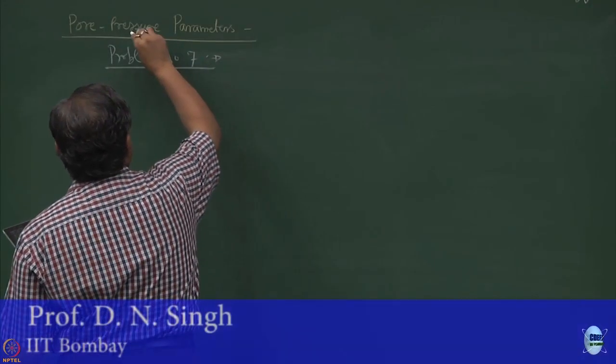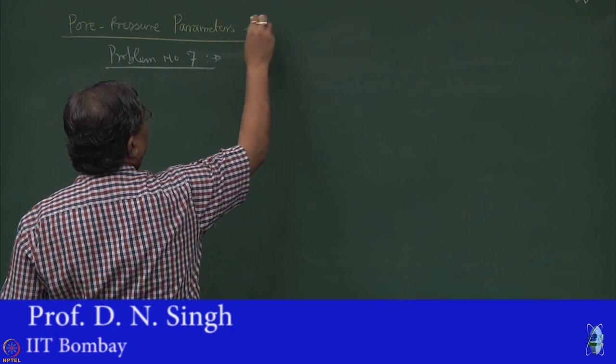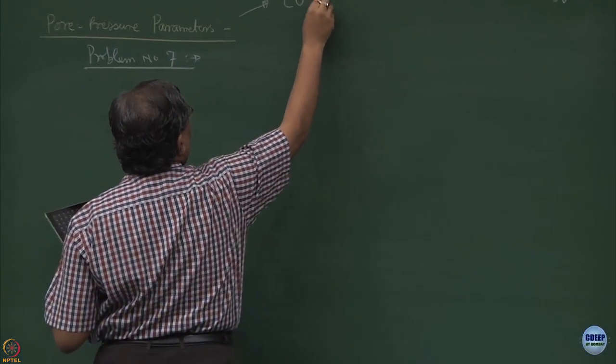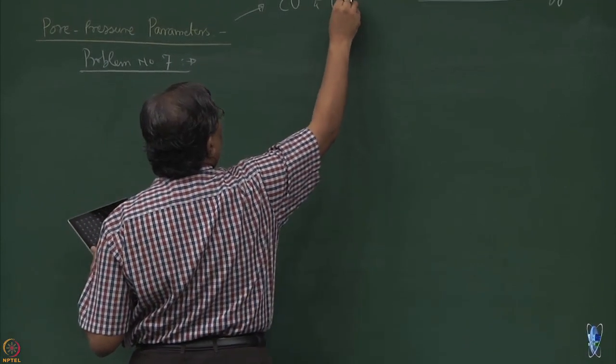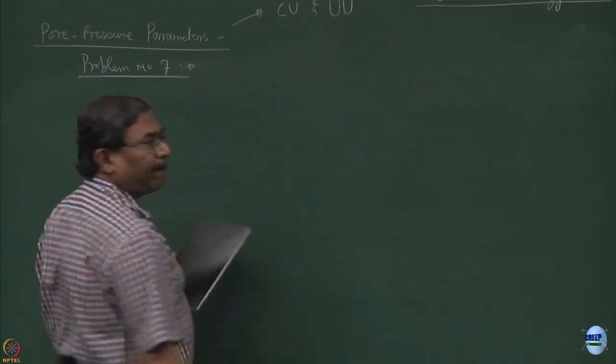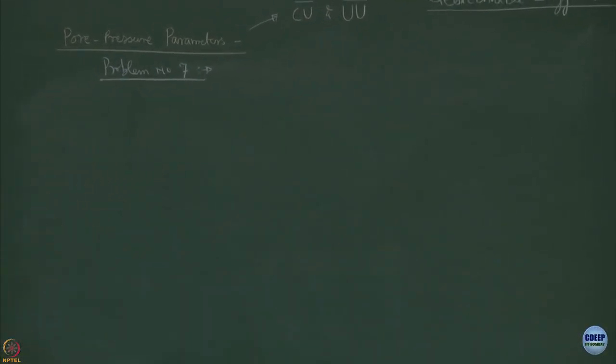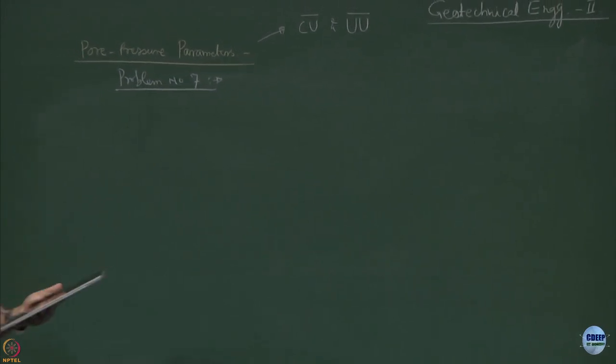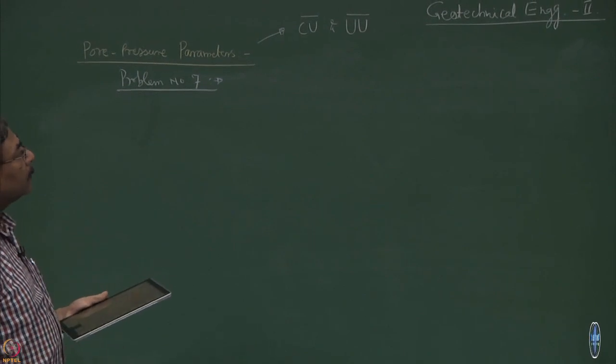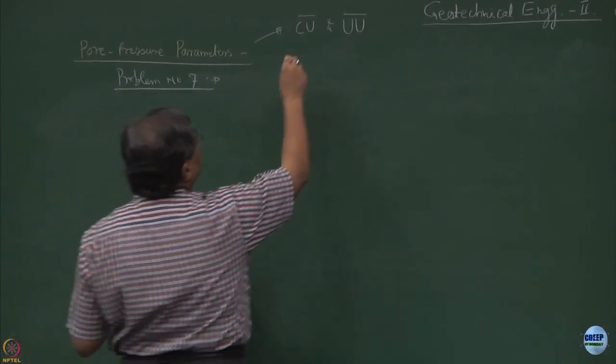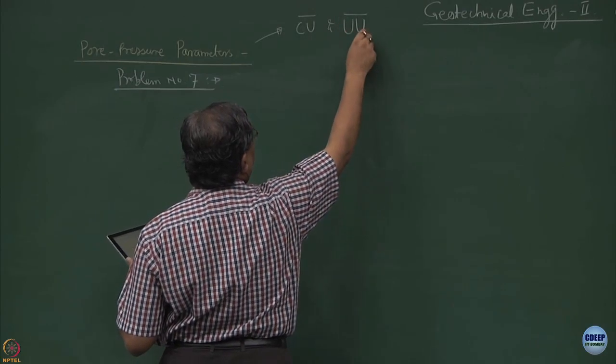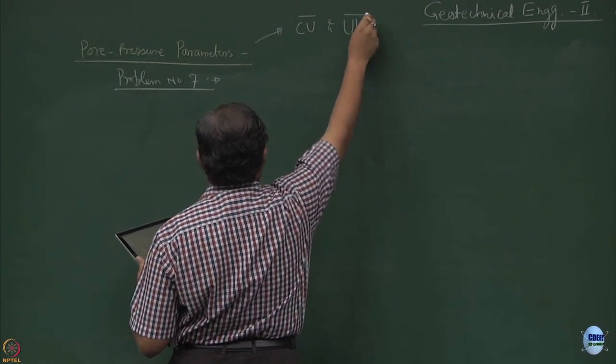I hope you understand when we are doing pore pressure parameters, we are talking about Cu prime test and Uu prime test. Prime is the word with prime is how we differentiate them. Consolidated undrained test with pore water pressure measurement, unconsolidated undrained test with pore water pressure measurement.